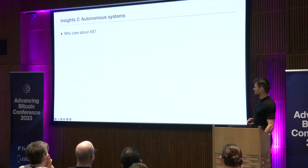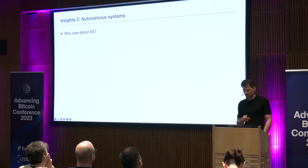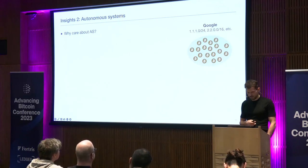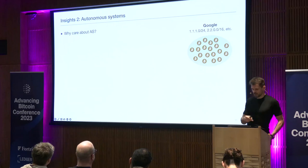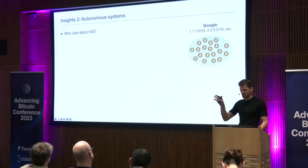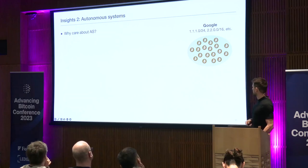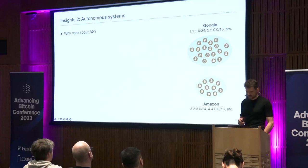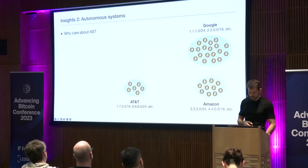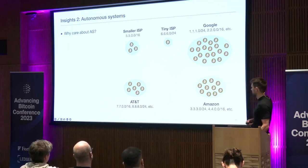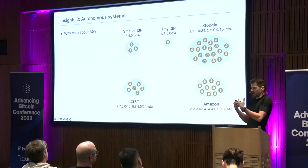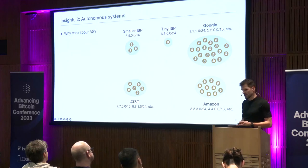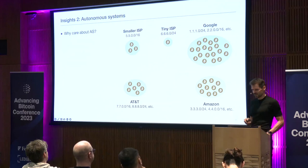The second insight concerns autonomous systems. You can think of an autonomous system as the big players on the internet that control multiple IP addresses. All Bitcoin network nodes can be assigned to different autonomous systems based on their IP address. For example, Google Cloud and Amazon are big parts of the network, along with various smaller providers. You want to avoid your node connecting to just a single autonomous system, because each autonomous system can be interpreted as being under the control of a single entity — and you don't want your node connecting only to nodes under one entity's control.